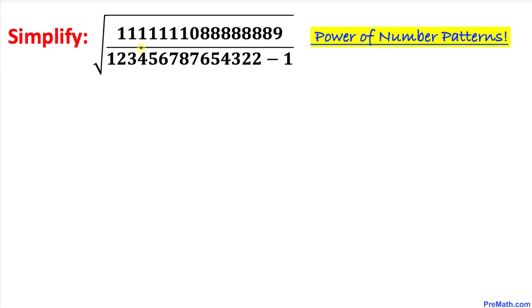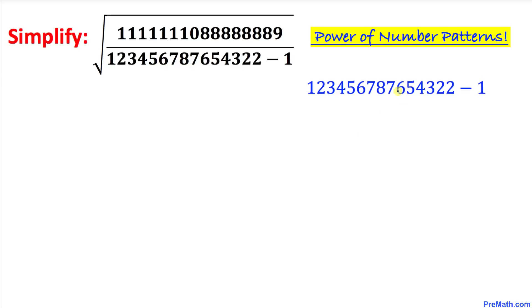Let's focus on the denominator — this huge number minus one. I've copied it down here. Let's go ahead and simplify it. This huge number minus one is going to give us just one less from the last digit.